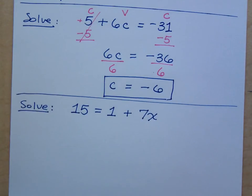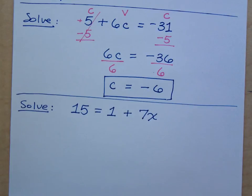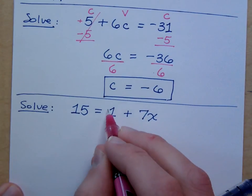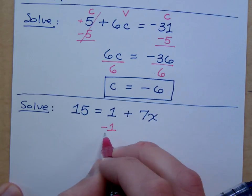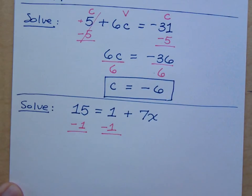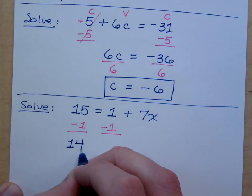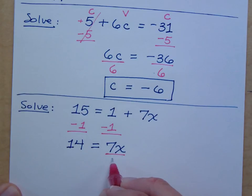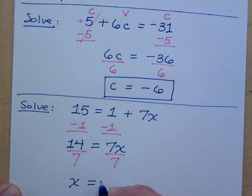All right. So how about 15 equals 1 plus 7x? Let's get the variable by itself, right? This is the only variable term, so what should I do first? Get rid of what's on its side, which is a 1. So I subtract 1 on both sides. Then I have 14 equals 7x. I divide by the coefficient of the variable, which is 7. So that tells you that x equals 2.